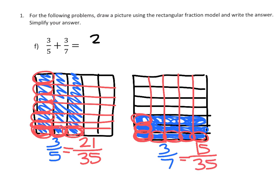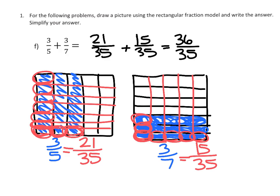Our common denominator gives us 21/35 plus 15/35, which equals 36/35. Our students could convert that to 1 whole plus 1/35. It might be surprising that we start with numerators that are the same — 3 and 3 — but when changed to common denominators, we suddenly have numerators that are different. The answer is 1 and 1/35, or we could just leave it as 36/35.